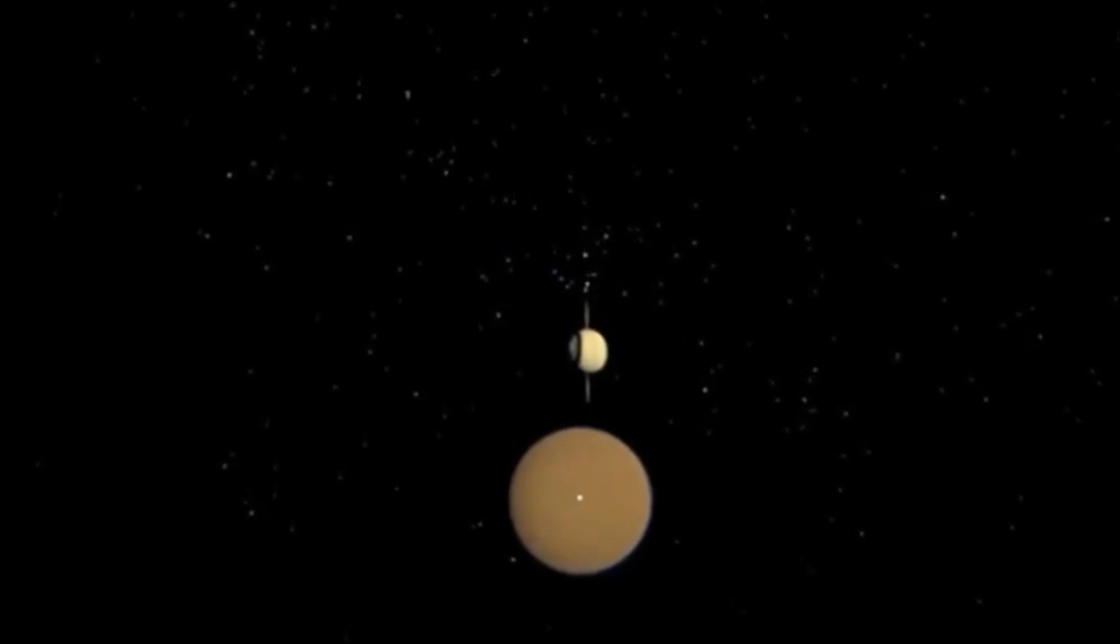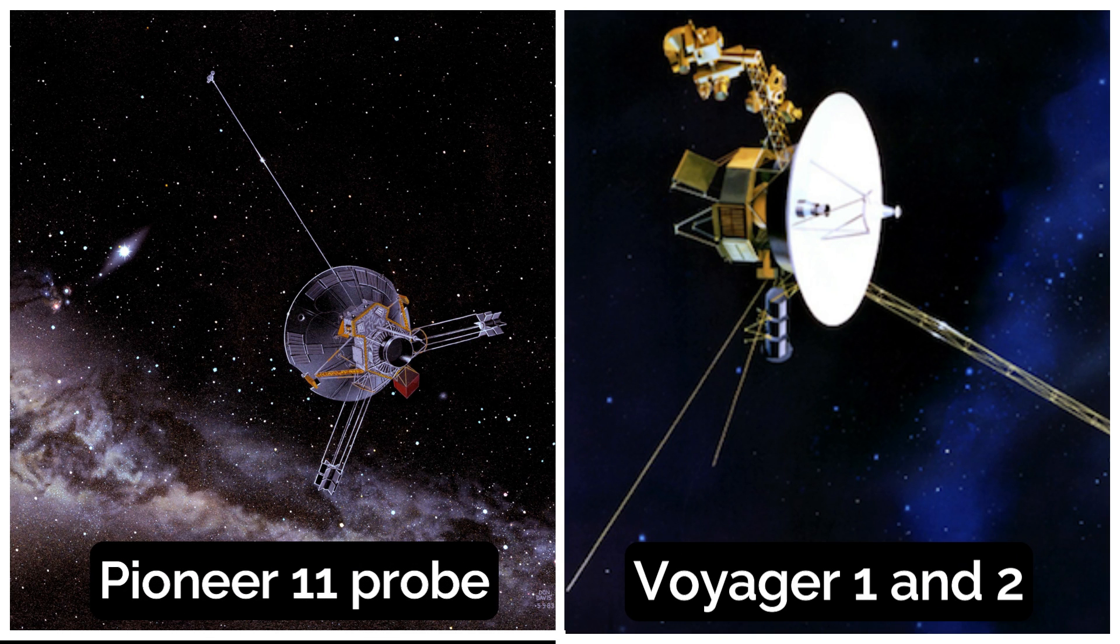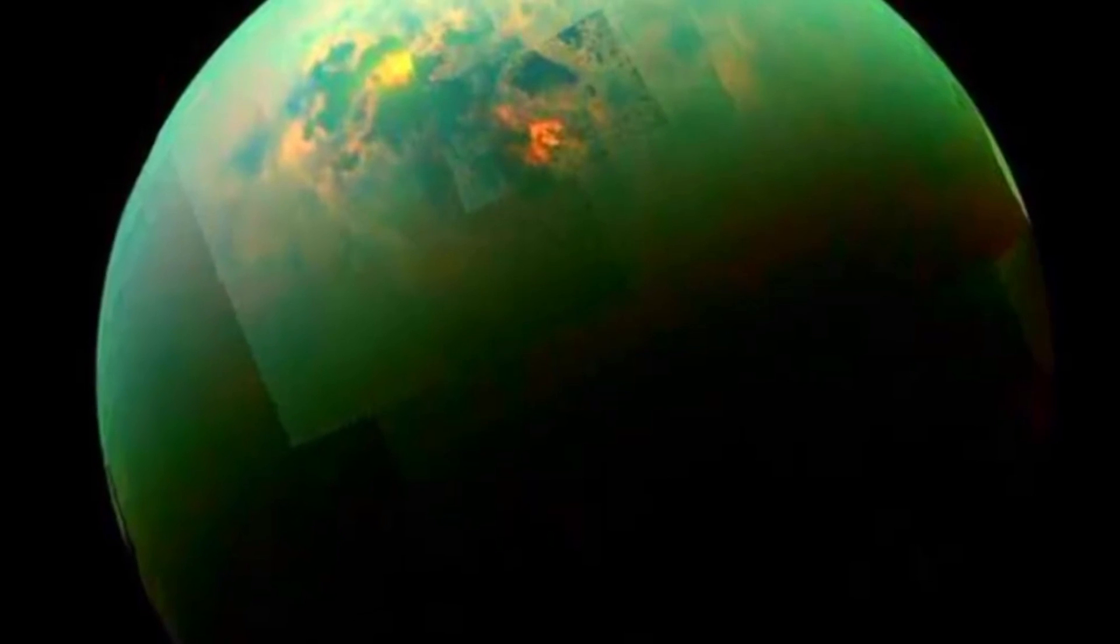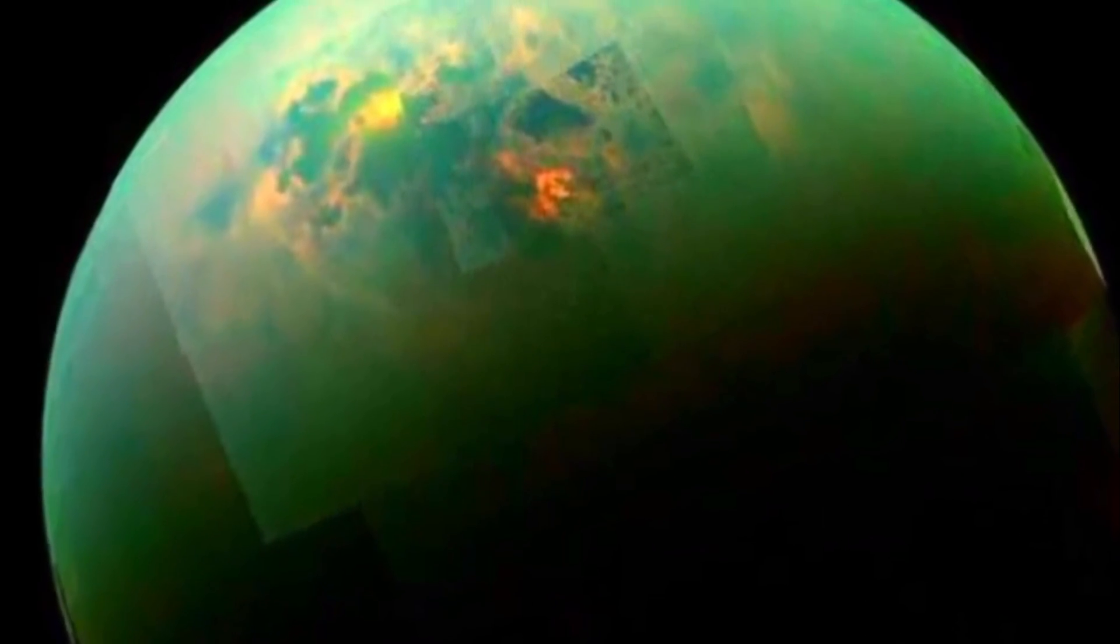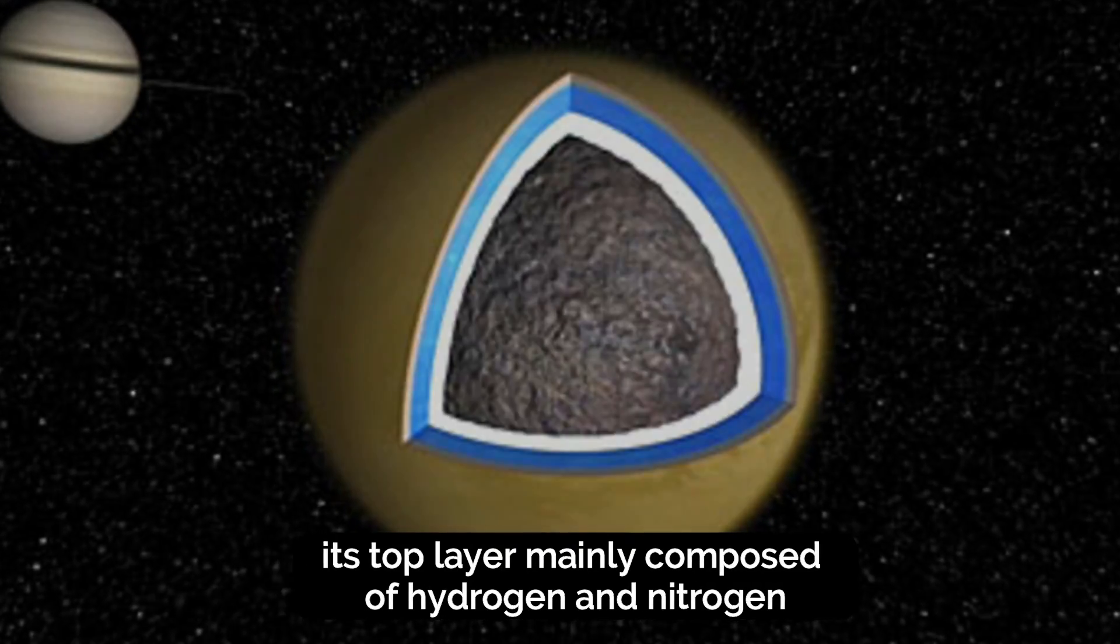Titan remained a major mystery until it was visited for the first time by the Pioneer 11 probe and then by Voyager 1 and 2. However, these first images could tell very little about the satellite, but they already showcased something unusual. The haze that obscured Titan from the eyes of the scientist turned out to be layered, with its top layer mainly composed of hydrogen and nitrogen.